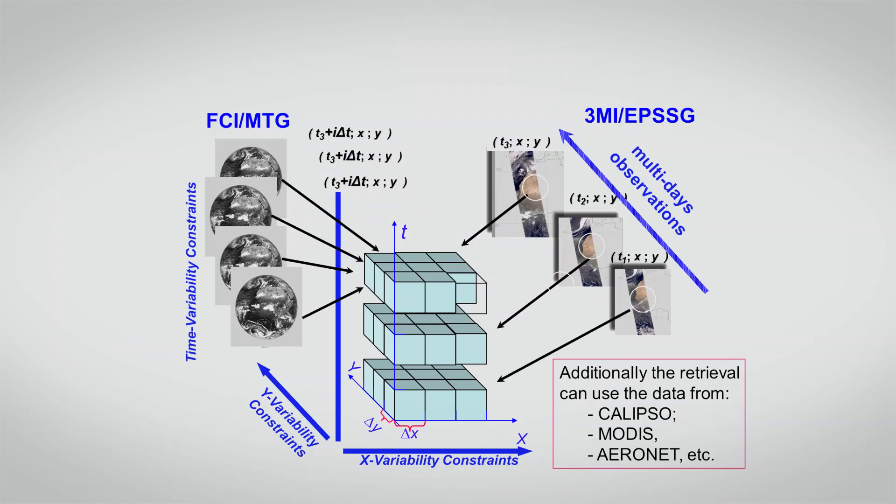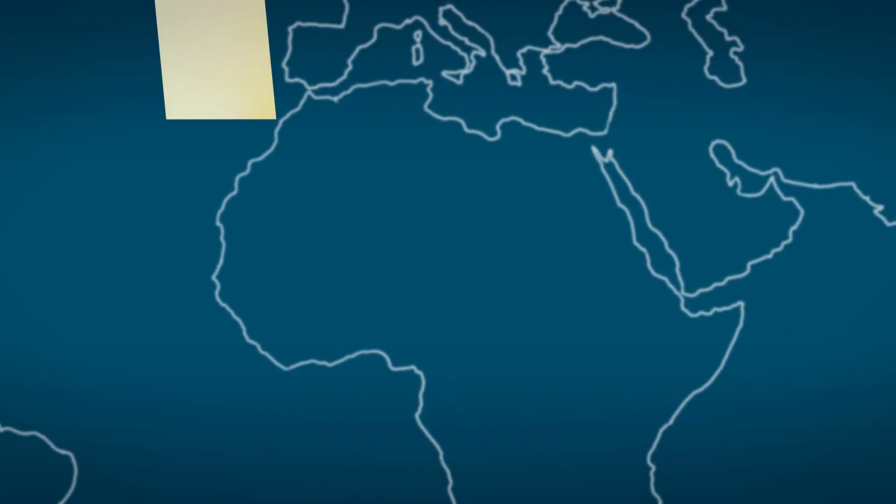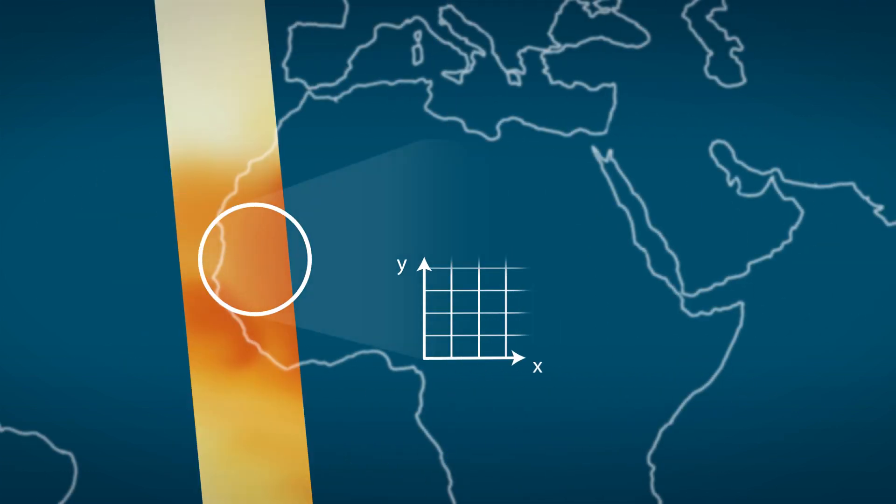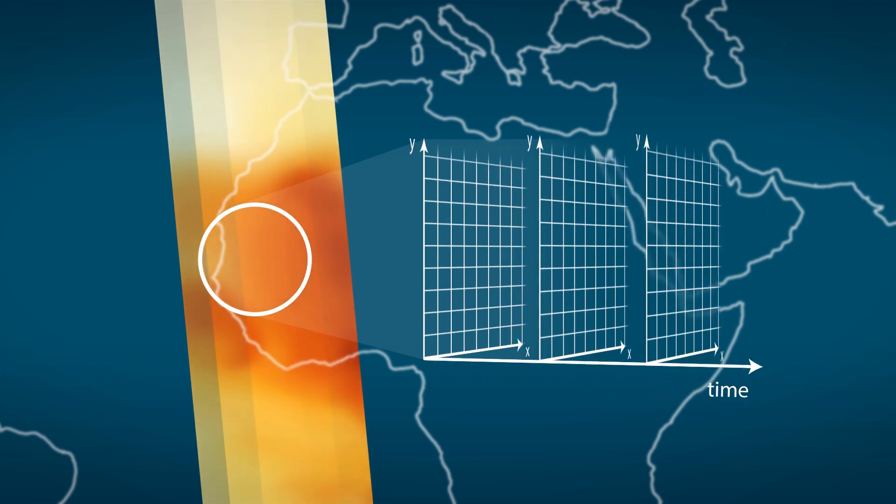GRASP uses an innovative multipixel approach that takes advantage of two extra constraints coming from observations. Aerosols have limited horizontal variability and surface properties change slowly with time.